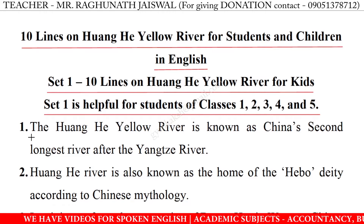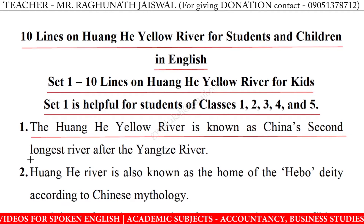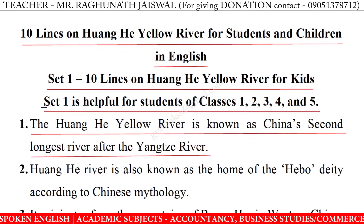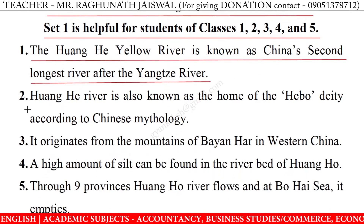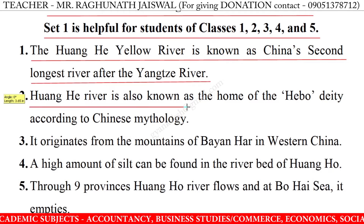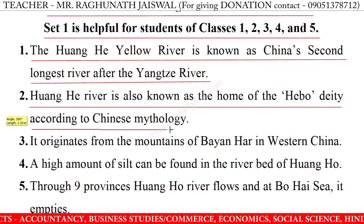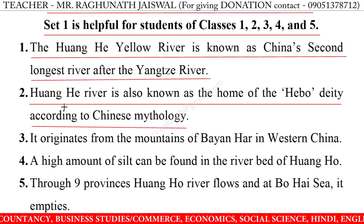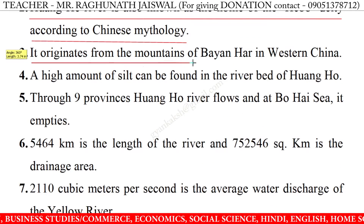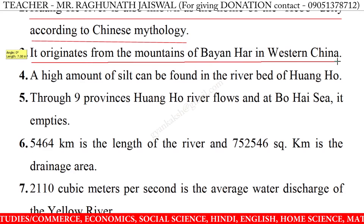1. The Huanghe Yellow River is known as China's second longest river after the Yangtze River. 2. Huanghe River is also known as the home of the Hebo deity according to Chinese mythology. 3. It originates from the mountains of Bayan Har in western China.